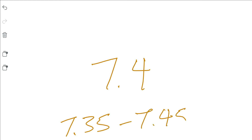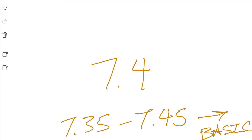That is not a big range. Anything above 7.45 is considered basic or alkaline, and anything below 7.35 is acidic.